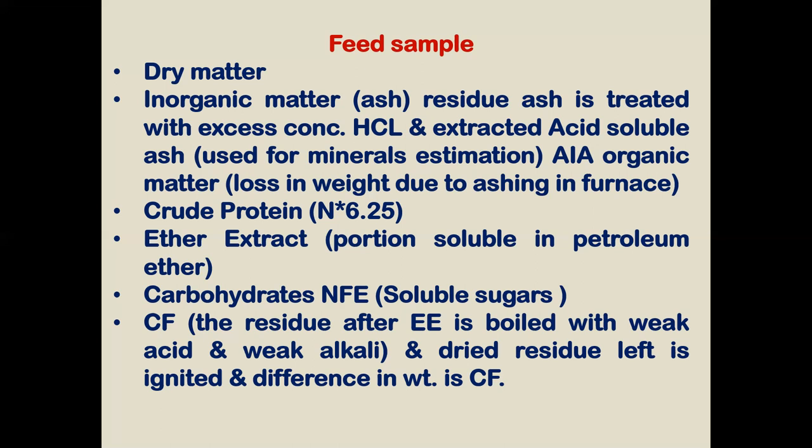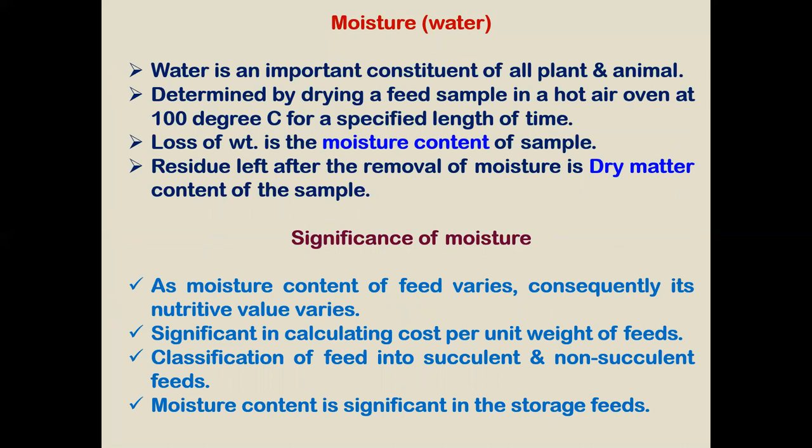I would like to discuss one by one. Moisture is a very important constituent for all plant materials as well as animals. For determination of moisture, nowadays moisture meters are available in the market, and automatically we can put the sample in this meter and it will show the moisture percentage of that feed — how much moisture is present.